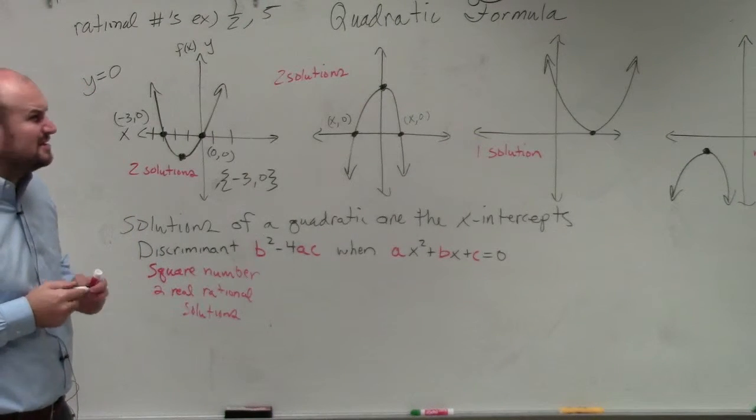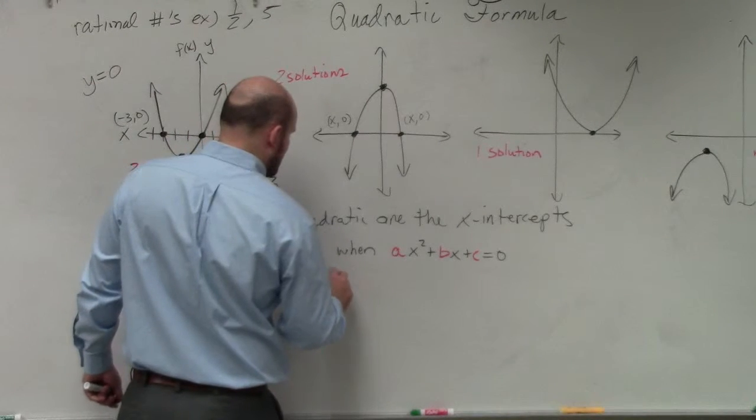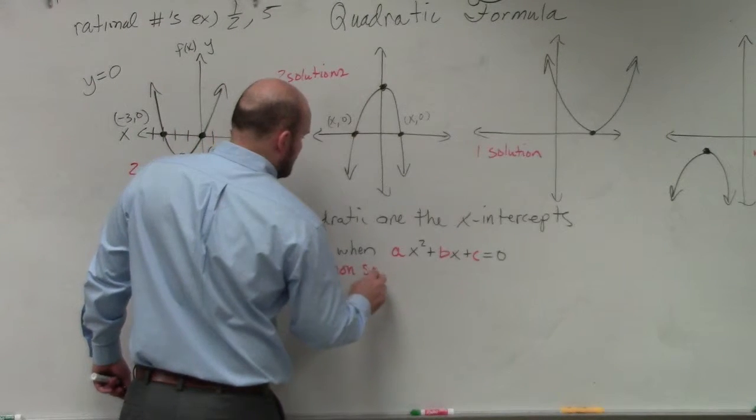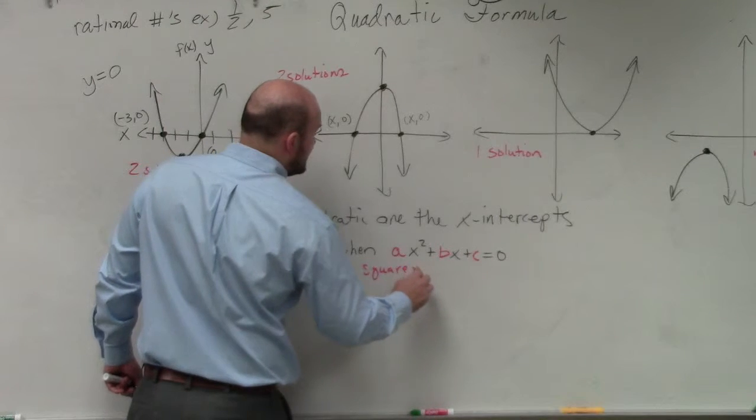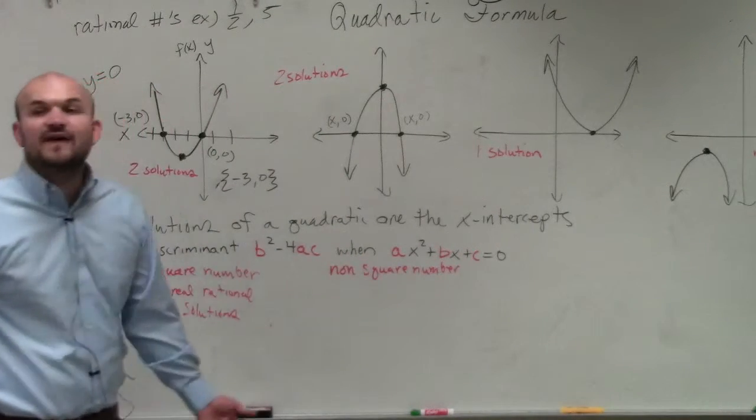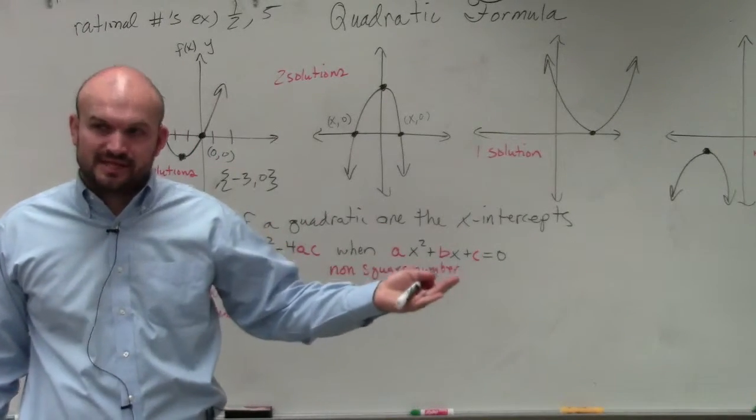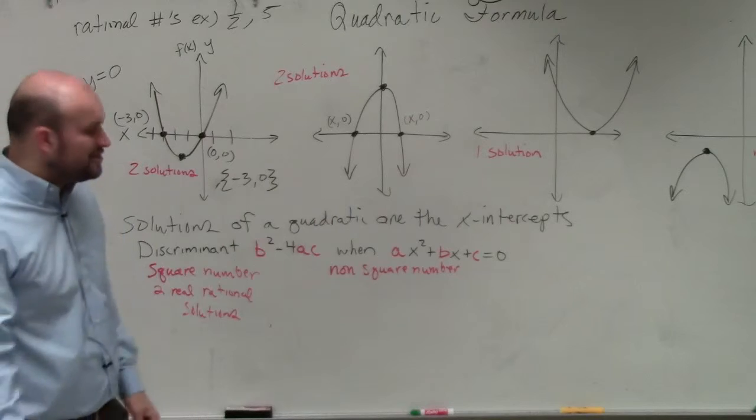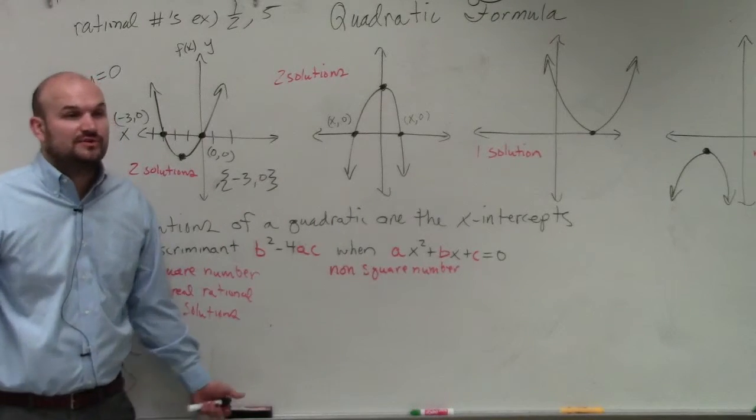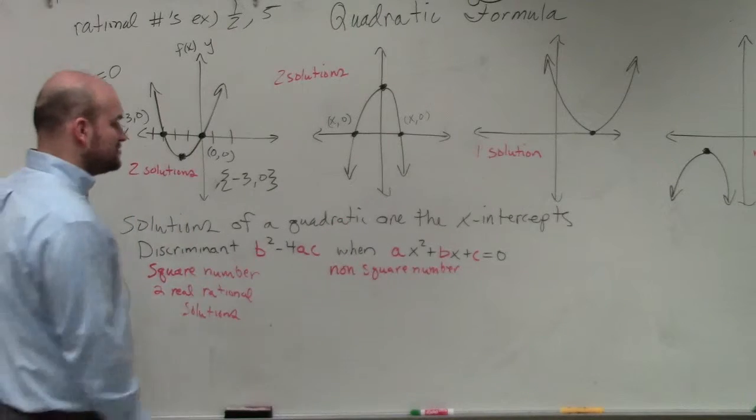All right. So what about, what is another example of two solutions? Well, what about if we have a non-square number? That is a number that you cannot take the square root of. For instance, like the square root of 5. Well, you can take the square root of it, but you're not going to evenly be able to take the square root. So you can't evenly take the square root of 5, right? You can't evenly take the square root of 11. You can't evenly take the square root of 20.